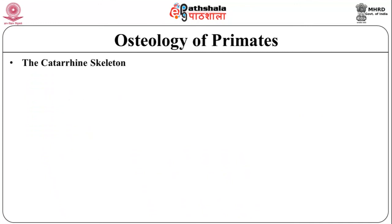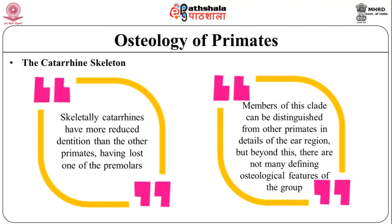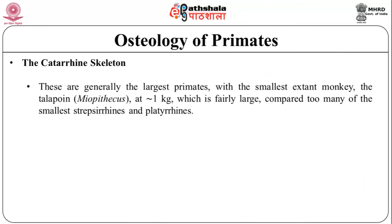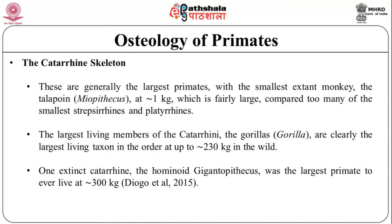Now let us see the Catarrhine skeleton. Skeletally, catarrhines have more reduced dentition than other primates, having lost one of the premolars. Members of this clade can be distinguished from other primates in details of the ear region, but beyond this there are not many defining osteological features of the group. These are generally the largest primates, with the smallest extant monkey, the talapoin, also known as Miopithecus, at approximately 1 kg, which is fairly large compared to many of the smallest strepsirhines and platyrrhines. The largest living catarrhines, the gorillas, are clearly the largest living primates in the order at up to approximately 230 kg in the wild. One extinct catarrhine, the hominoid Gigantopithecus, was the largest primate to ever live at approximately 300 kg.